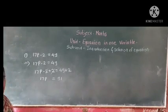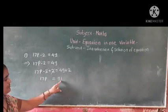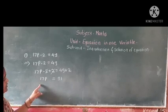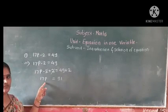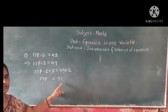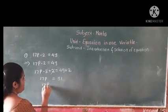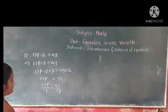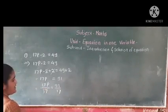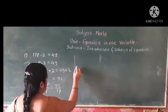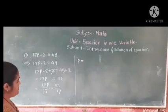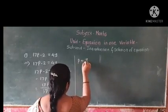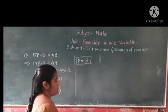Second step: 17p is equal to 51. Here 17p is multiplication form, so the opposite operation is division. We divide both sides by 17. 17p divided by 17 equals 51 divided by 17. The 17 gets cancelled, only p remains. 51 divided by 17 gives the answer 3. So the value of p is 3.